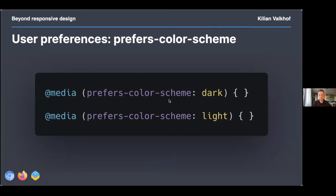You can use the prefers-color-scheme media feature to check, with values of dark or light. There used to also be a value called no-preference, but it was removed because it was essentially the same as light mode — browsers implemented it the same way. After two or three years of no-preference mapping to light in all browsers, they removed it from the specification as well. So now it's just dark or light — nice and clear.